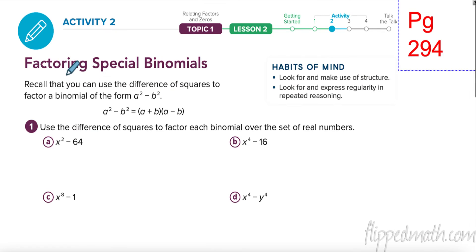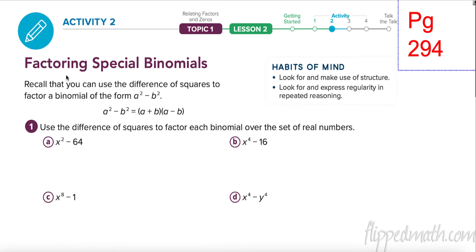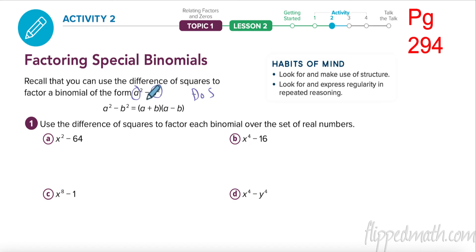The first one is something we've done a lot and you're expected to know: factoring special cases — specifically difference of squares. I have a perfect square minus a perfect square — that's the difference. The square root of the first goes in the front, the square root of the second goes in the back, one's plus and one's minus.